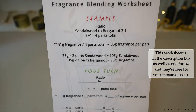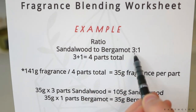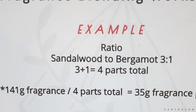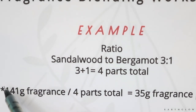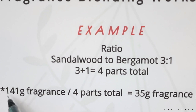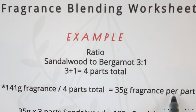I made up some fragrance blending worksheets to help make this a little bit easier. In this example, I was blending sandalwood with bergamot, and I wanted to use three parts of sandalwood for every one part of bergamot. The very first step is to figure out what your parts total are — just add three plus one to get four parts total. This number is going to be the amount of fragrance based on your wax weight and the percentage of fragrance you're using. So you take that number and divide by your parts total to get 35 grams of fragrance per part.